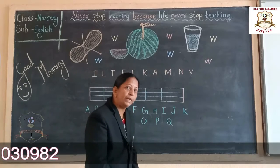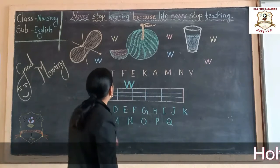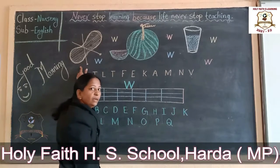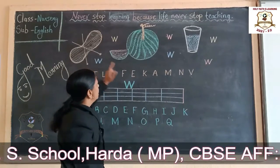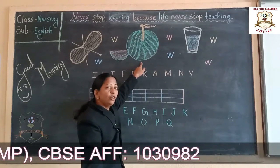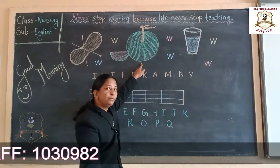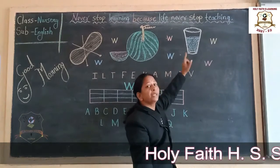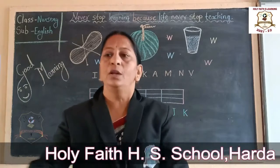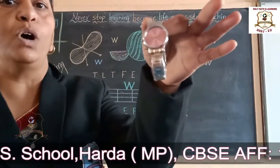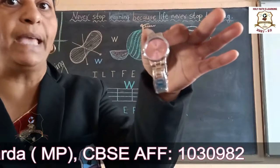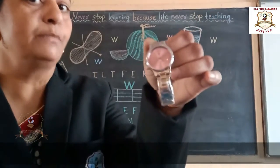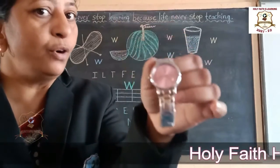Which letter are we learning today? W. W for Wool. W for Waterman. W for Watch. Do you see who wears a watch? You are all too young. Mamma and pappa wear them. W for Watch.